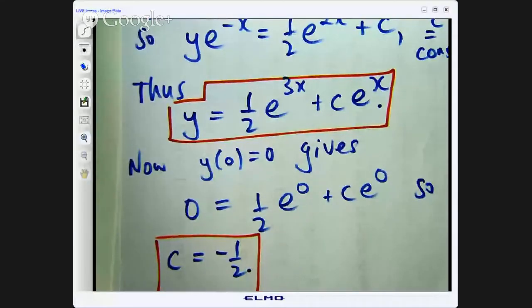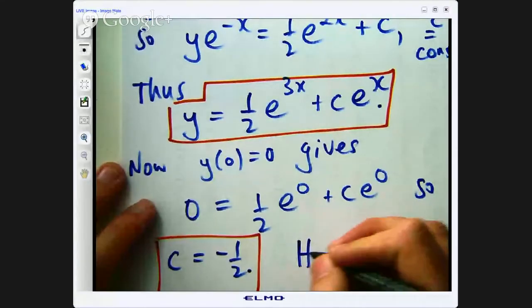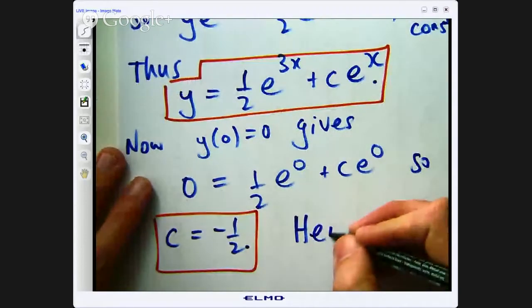Let us put it all together now. We are going to replace the c in our general solution with negative 1 half. Hence, there it is.